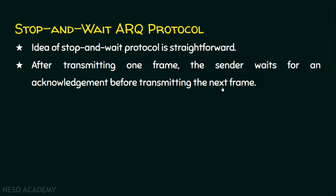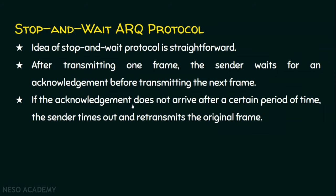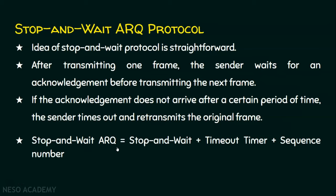How does stop and wait ARQ differ from stop and wait protocol? If the acknowledgement does not arrive after a certain period of time, the sender times out and retransmits the original frame. There will be a timer running on the sender side. Once the timer expires, the sender will immediately retransmit the frame again. This retransmission is automatic, and that is why we call this the automatic repeat request protocol. Stop and wait ARQ is simply stop and wait protocol, but additionally it has a timeout timer and a sequence number for the frame.